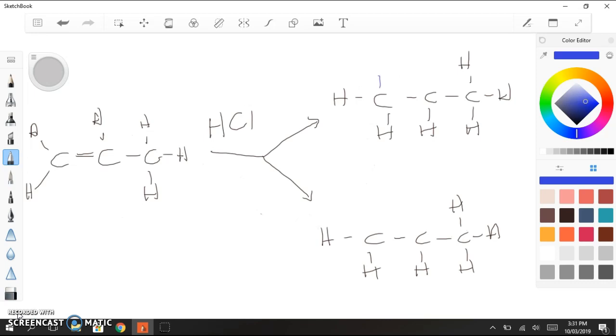I can put the H on the first carbon and the Cl, or it could be a bromine or an OH or anything else on the second carbon. Or I can go the other way around, and I can put the Cl on the first carbon and the H on the second carbon.